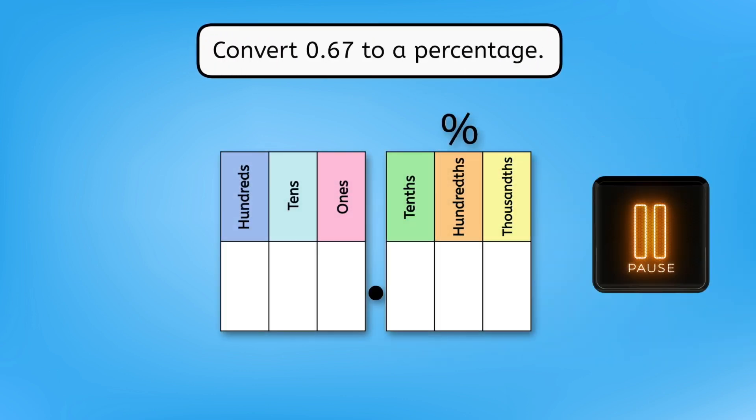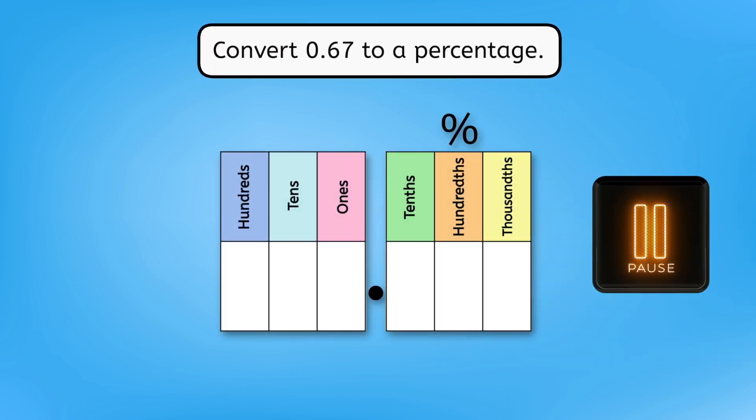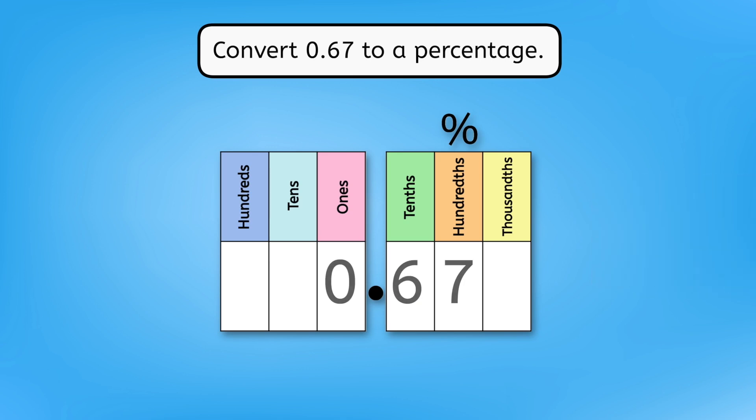Pause here to try it out. Using the place value chart, convert 67 hundredths to a percentage. After writing the digits into the place value chart, we can see that 67 hundredths is also 67 out of 100, which is 67%.